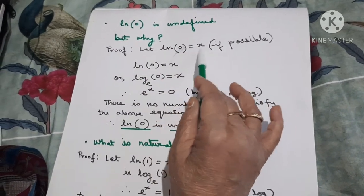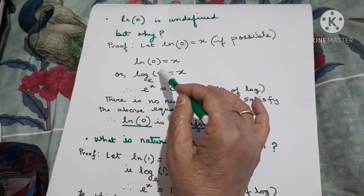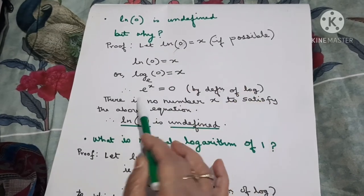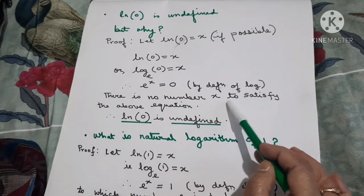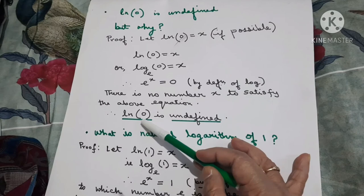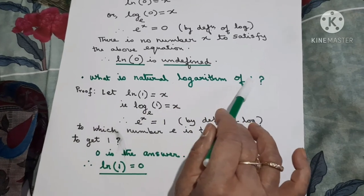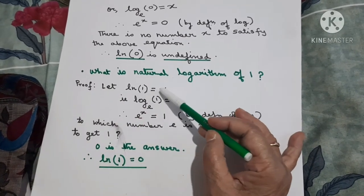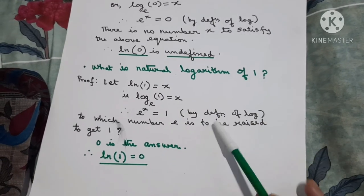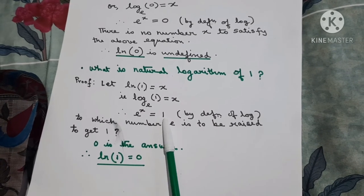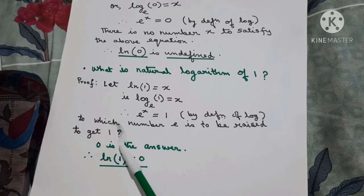Proof that ln(0) is undefined: suppose ln(0) = x, that is log 0 to the base e equals x. Then by definition of log, e to the power x equals 0. There is no number x to satisfy this equation, so ln(0) is undefined. What is the natural logarithm of 1? Prove that ln(1) = 0: e to the power x equals 1, and the answer to which power e must be raised to get 1 is 0.